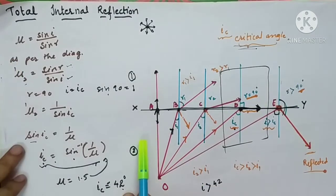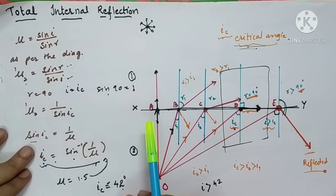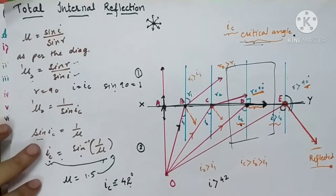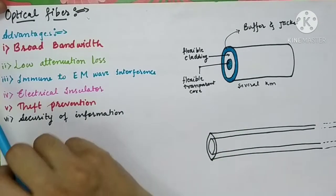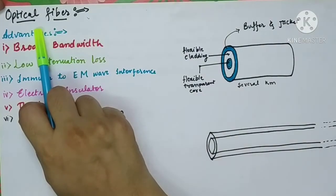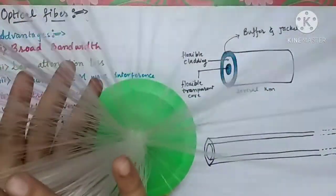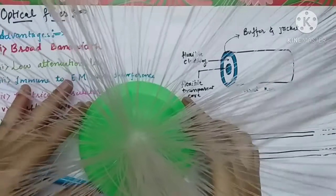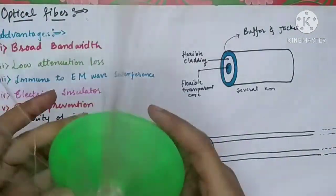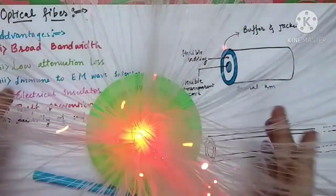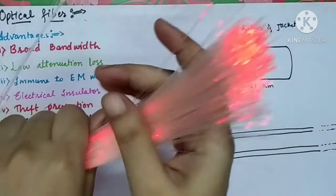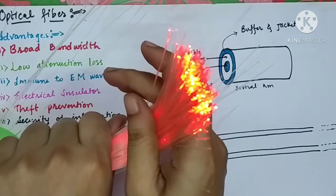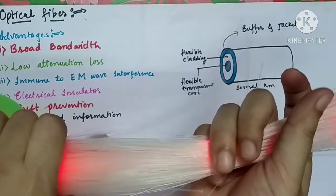Today we are going to study the application of total internal reflection, which is very important. The first application — and the rest are omitted — is optical fiber. Students, you might have seen such fibers. Notice how it glows: the bright spot appears only at the tip of the fiber, and no light is emitted from the rest of the fiber.